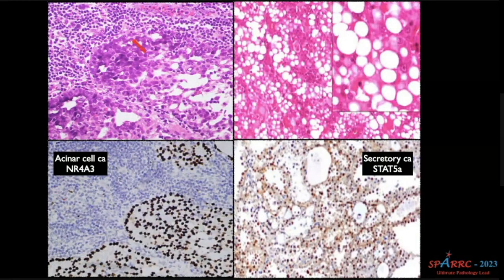Acinic cell carcinoma will have a lot of lymphoid cells in the background and will be very nicely positive for NR4A3, the nuclear marker. And one more point: whenever you see a tumor with a lot of lymphoid cells, you have to remember PD-1 and PD-L1, which I will be talking about. Any tumor that has lymphoid cells in the background — think of PD-1 and PD-L1. And this is a secretory carcinoma on H&E, which is nicely positive for STAT-5A.